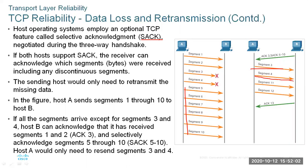With SACK, the sending host only needs to retransmit the missing data — just segments 3 and 4 — instead of retransmitting 5 through 10. This saves transmission, data, and time, and reduces redundancy. Because host B can selectively acknowledge that it received segments 1, 2, and 5 through 10, host A only needs to retransmit segments 3 and 4 — and that ensures reliability of the data.